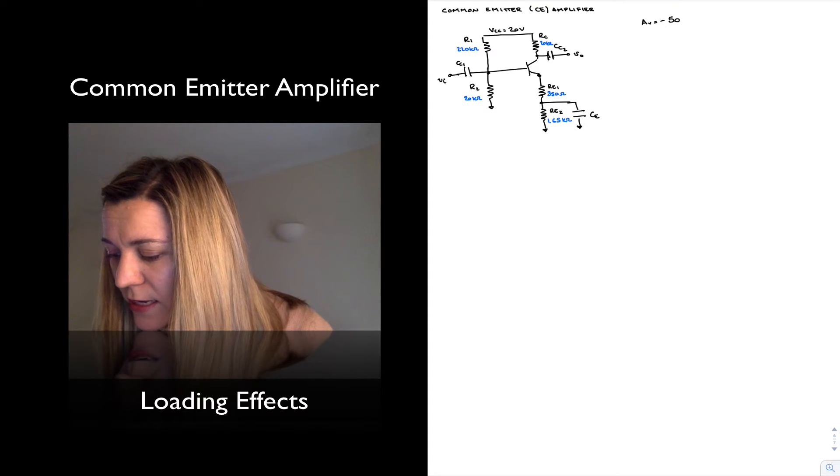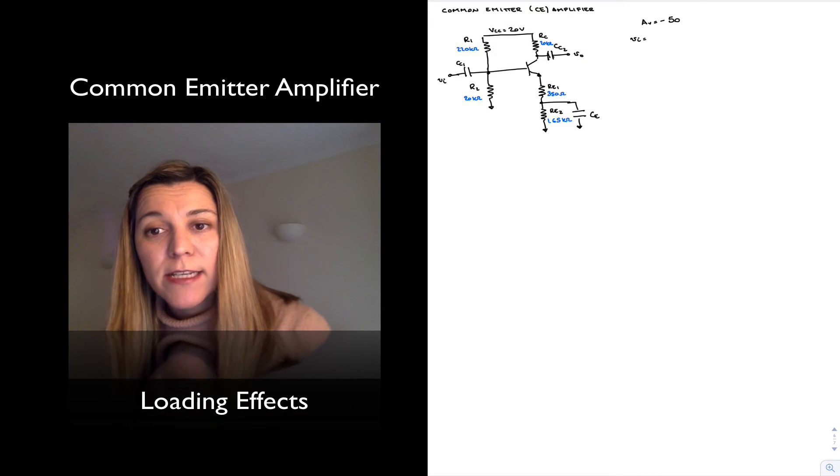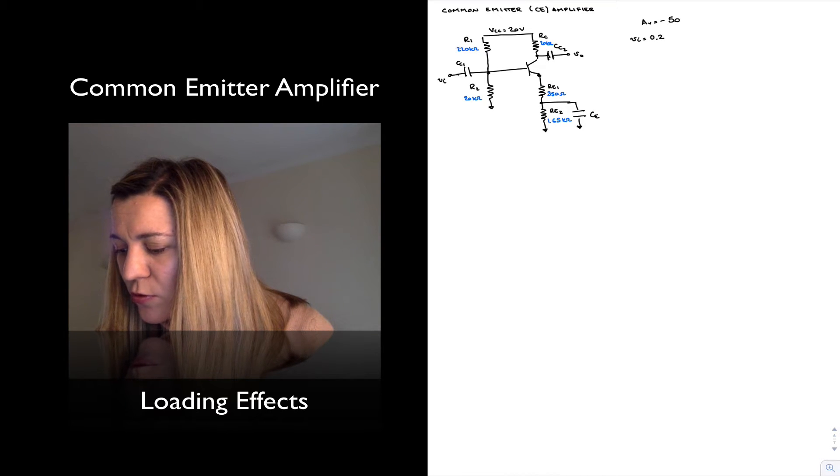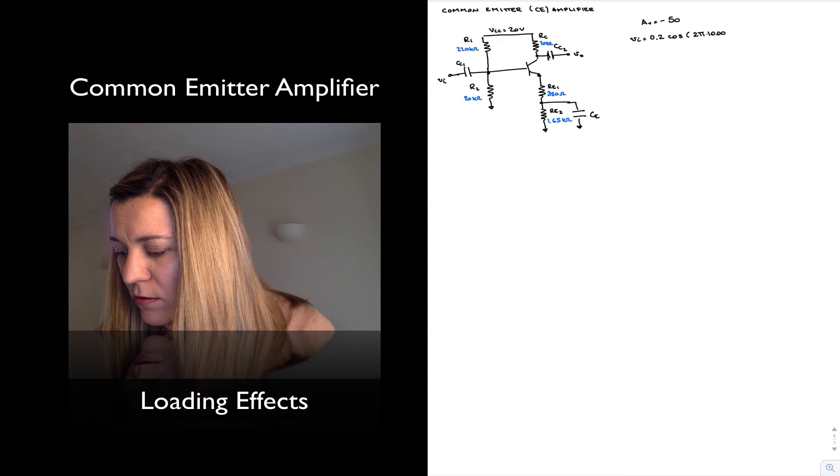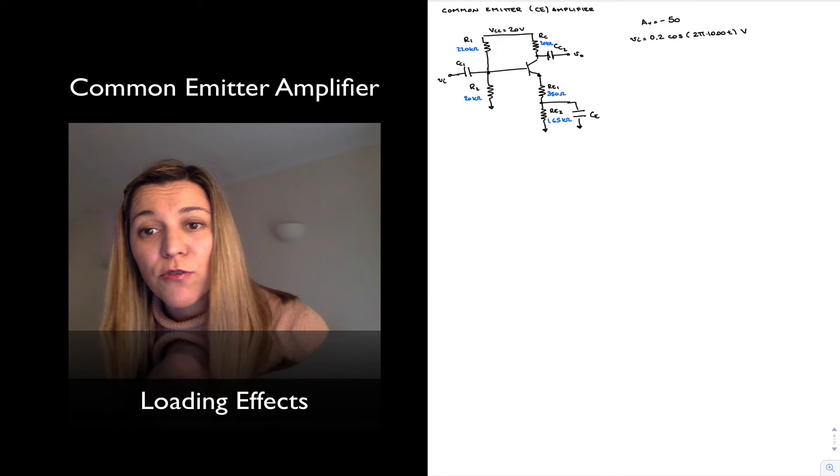So in the ideal case, let's say I apply an input signal which is a sinusoidal signal with an amplitude of 200 millivolts, so something like 0.2 cosine of 2 pi times 1000 T volts, so it's a sinusoid of 1 kilohertz.